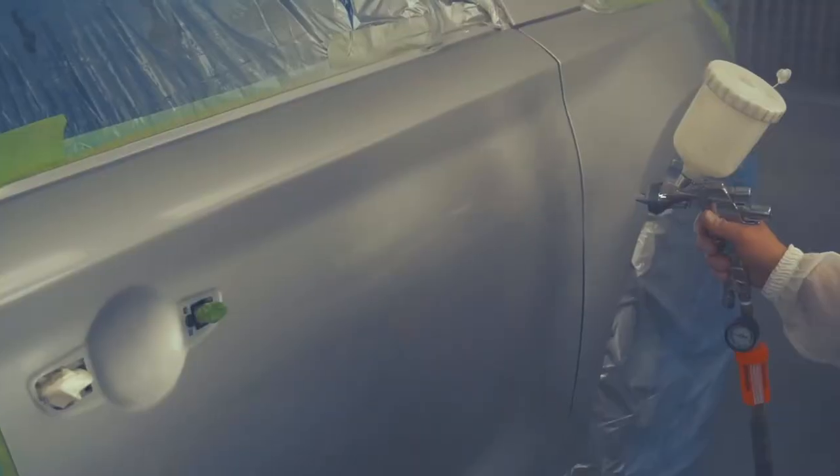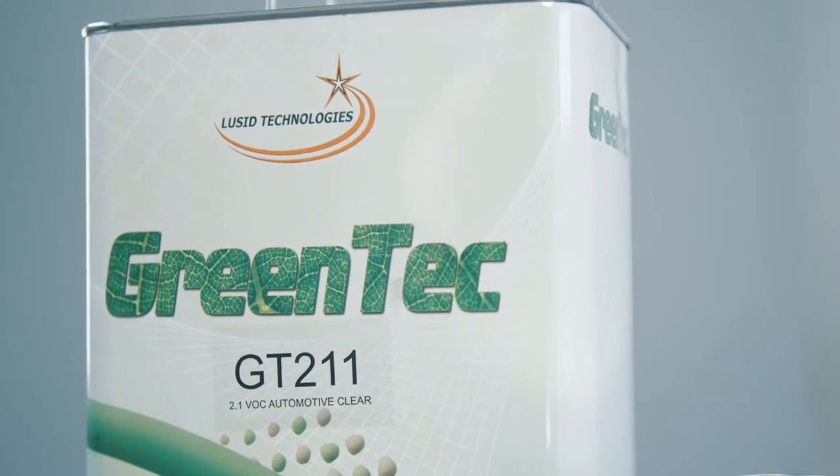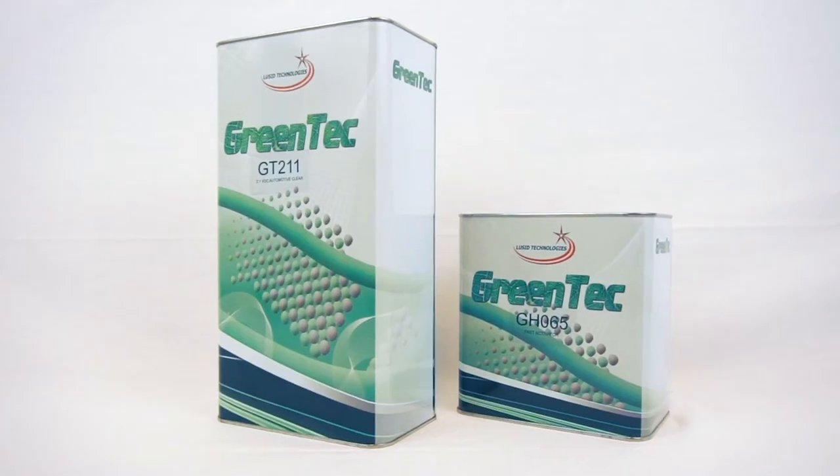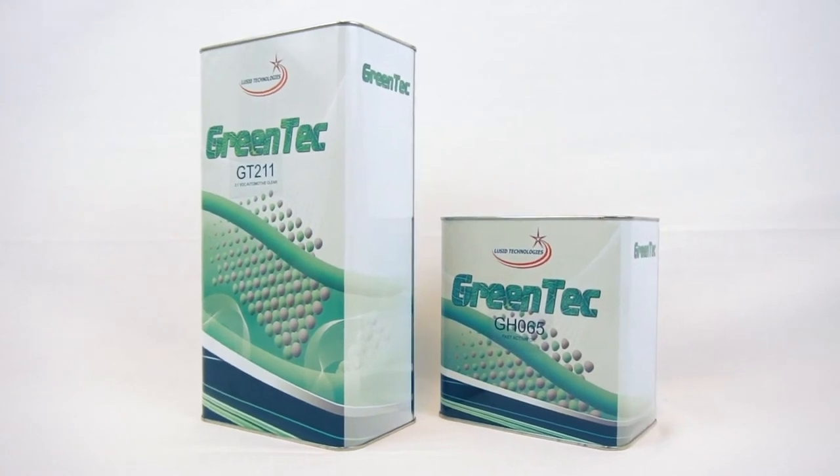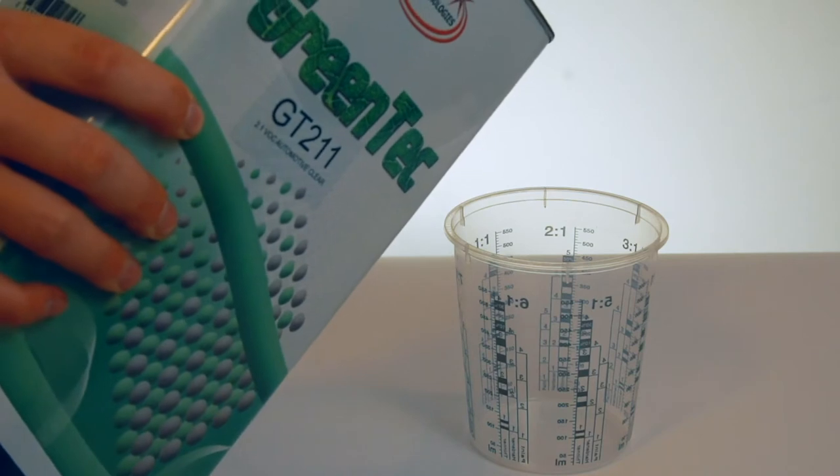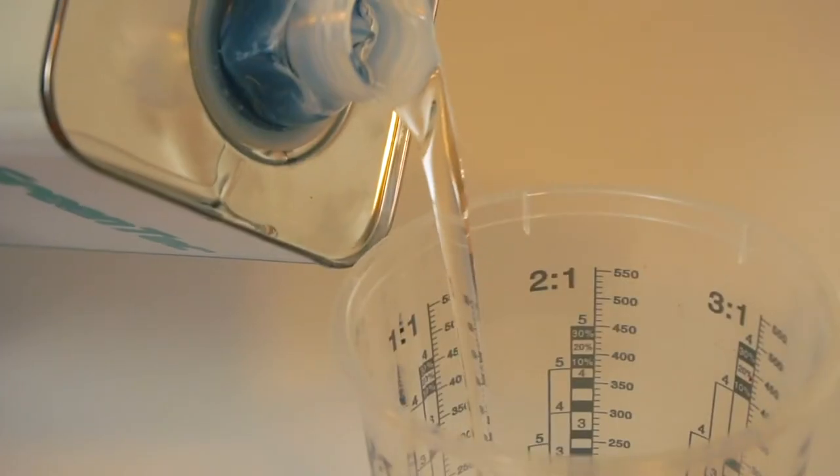The King of Clears helps shops boost productivity with its ease of use and economical cost. GT211 is packed in 5-liter clear and 2.5 liter activator containers. When properly reduced in a 2 to 1 to 1 mix ratio, you get 2.6 gallons of sprayable material.